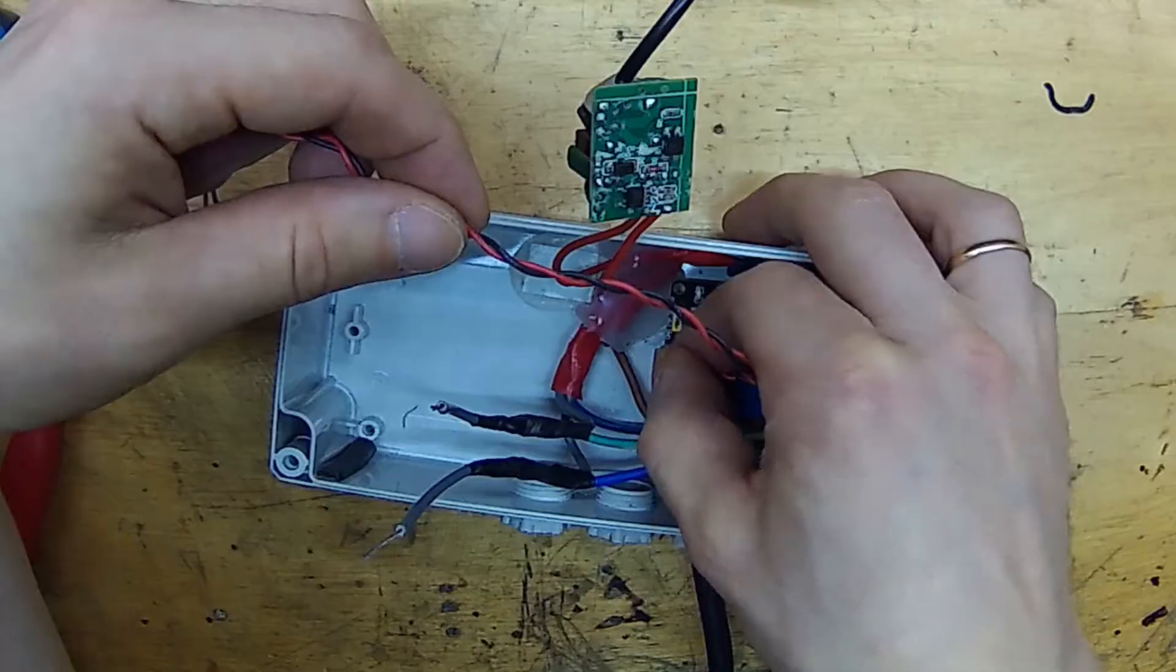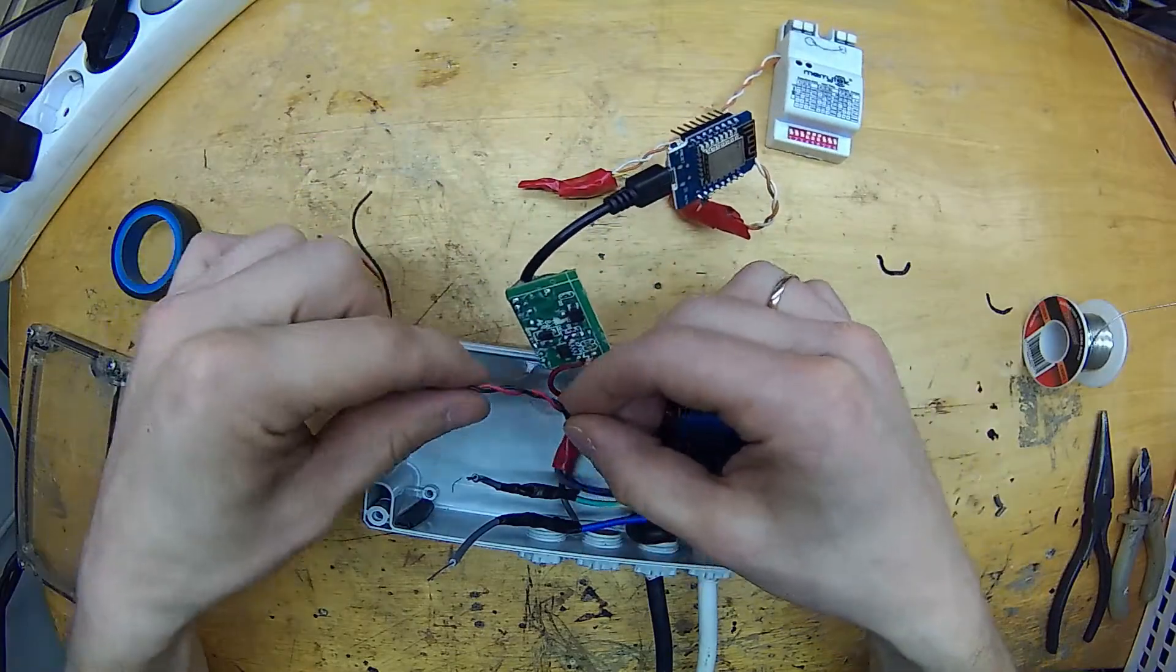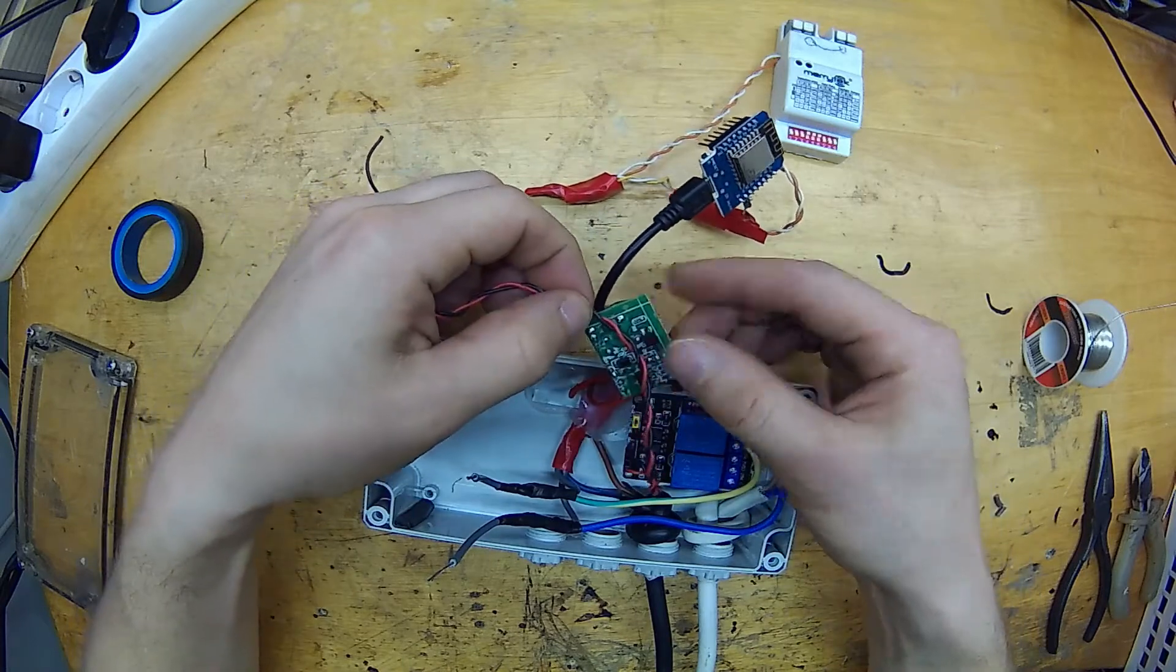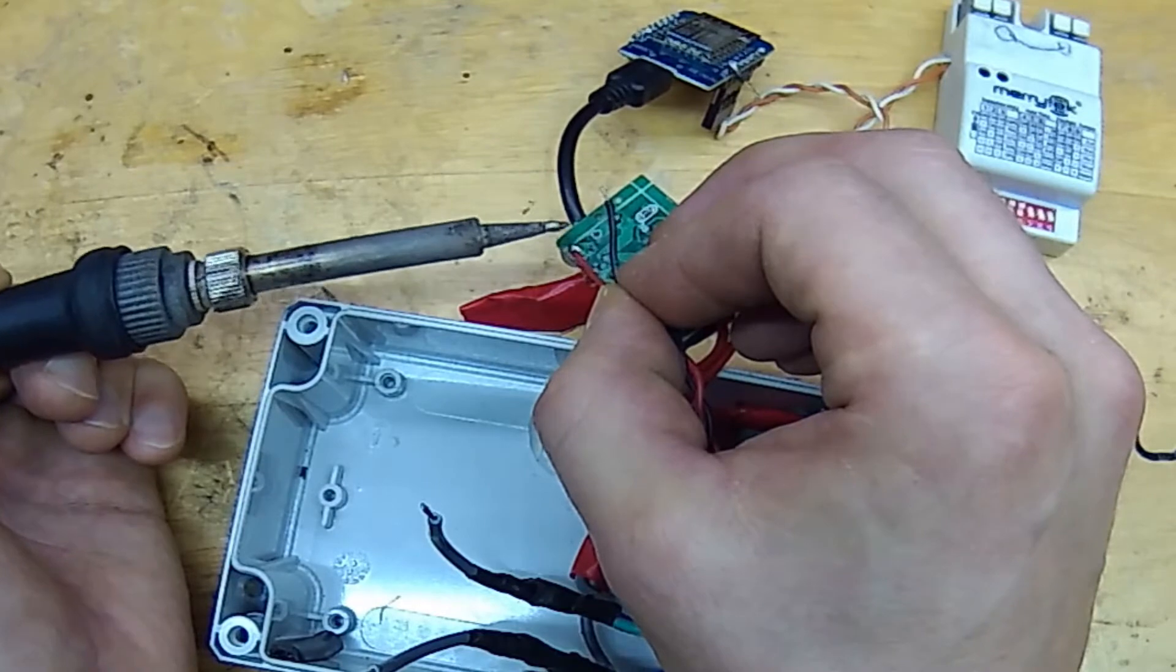Next I'm going to connect 5V power to the relay module. I'm not using the 5V pins on the Wemos board because those may not provide enough current for the relay module. So I'm soldering these wires straight to the power supply. And applying some hot glue to keep those wires in place.